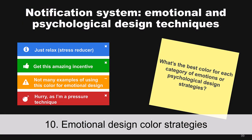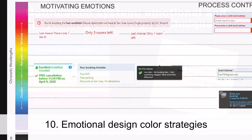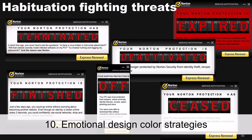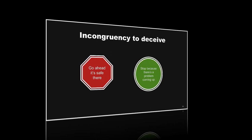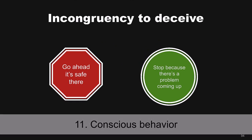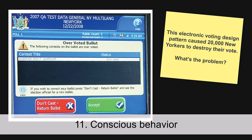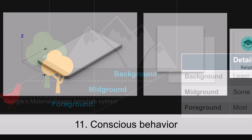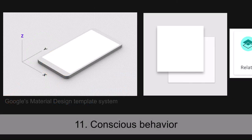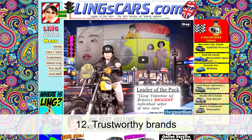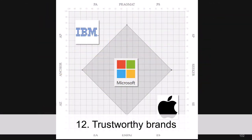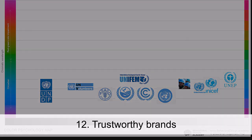In module ten, we're going to look at emotional design color strategies — this is going to be much more hands-on, with teardowns and walkthroughs. In module eleven, we'll look at how we design for the conscious brain, learning techniques for color strategies that go a little bit unnoticed and those that force someone to pay attention to what's going on. Finally, in module twelve, we'll deal with one of the most important subjects: how we design for brands that foster trust.